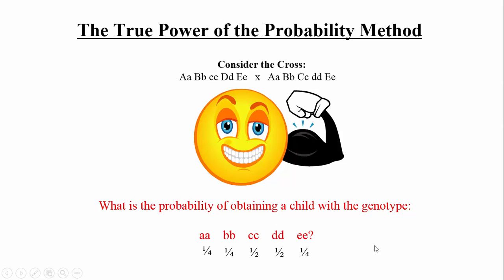Now we reunite the genes. Since the organism must be little a little a and little b little b and little c little c and little d little d and little e little e — all simultaneously — we use the multiplication rule, not addition. Multiplying all the fractions across gives a final answer of 1/256. This approach, using independent assortment and multiplication, is far faster than constructing a full Punnett square for five genes.